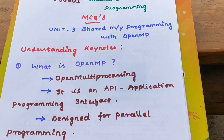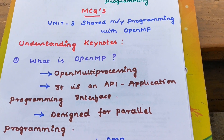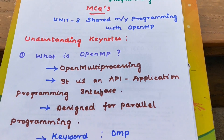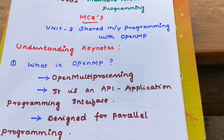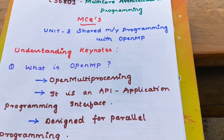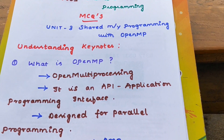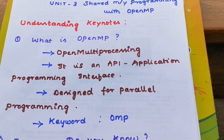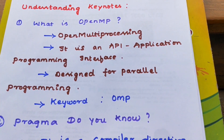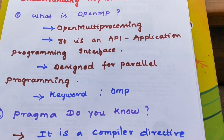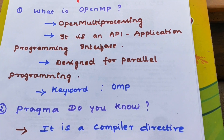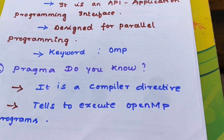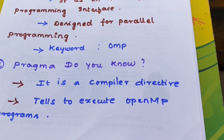OpenMP's main objective is parallel programming. To solve complex problems in nanoseconds or microseconds, we complete tasks simultaneously using OpenMP. And then next, pragma — do you know pragma? It is nothing but a compiler directive.